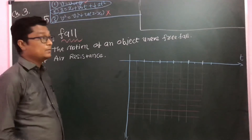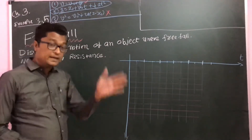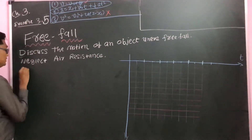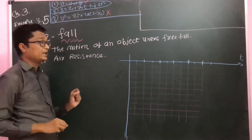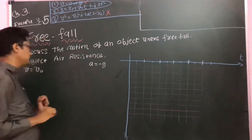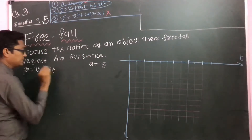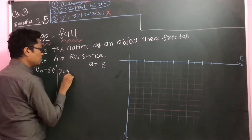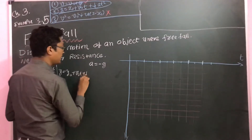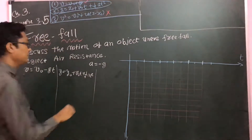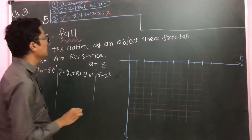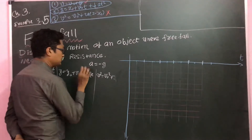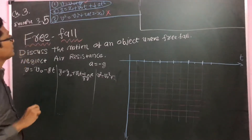We are going to use the three kinematic equations, but since the motion is happening along the vertical y-axis, we replace 'a' with '-g'. So the equations become: v equals v₀ minus gt; y equals y₀ plus v₀t plus one-half(-g)t²; and v² equals v₀² plus 2(-g)(y - y₀).